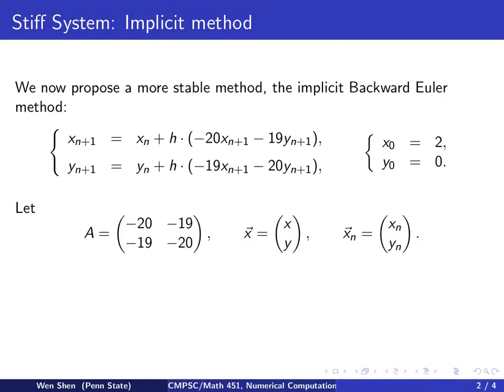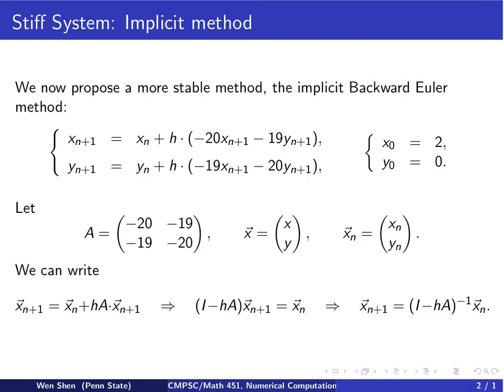So let's denote again A to be this coefficient matrix, and X the unknown vector, collecting X and Y, and vector X_n will be the discrete value for X at time t_n. By this notation, now we can rewrite the iteration step using matrix vector notation.